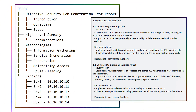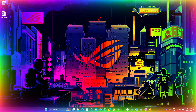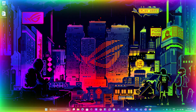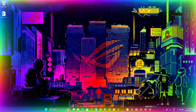Let's delve deeper into the report structure required for the OSCP exam. The OSCP report mandates the inclusion of several critical sections: Introduction, Objective, Scope, Summary, Recommendations, Methodologies, Information Gathering, Service Enumeration, Penetration, Maintaining Access, House Cleaning, and Findings. Within these sections, you will need to include all MD5 hashes obtained from each target machine for thorough documentation and validation. You will be required to submit a comprehensive penetration test report, which showcases your ability to conduct professional-level penetration testing. So let's take a look at an official report provided by Offensive Security.